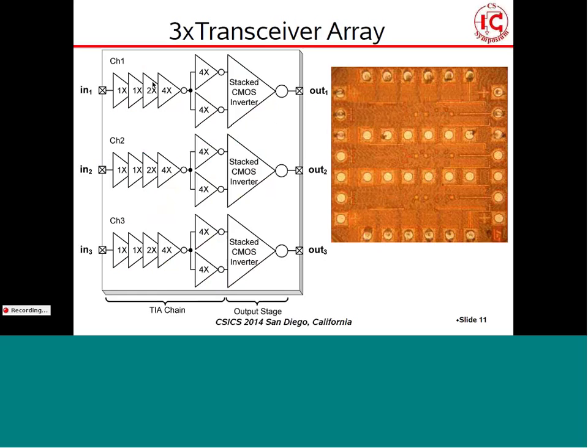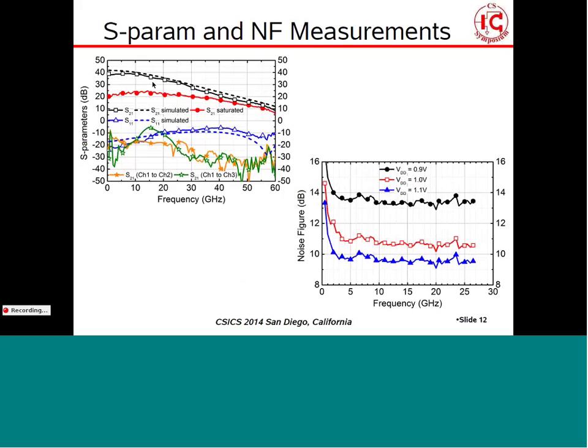This is the circuit demonstrator on slide 11 — unpublished work, so we're not showing the schematic. It's a different project: a 3X transceiver array with receiver and transmitter, three identical channels. It features a very low noise transimpedance amplifier input receiver and a very large swing — over 4 volt peak-to-peak — stacked CMOS inverter output stage. The die photograph shows the three channels flip-chip, one millimeter by one millimeter. Slide 12 shows the measured S-parameters of one lane and the crosstalk between lanes.